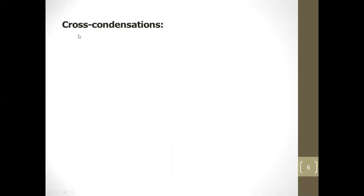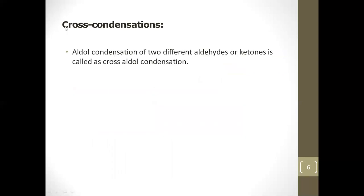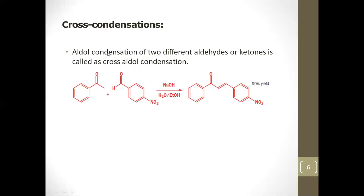Now we discuss cross aldol condensation — the aldol condensation of two different aldehydes or ketones. The previous acid- and base-catalyzed examples were self-condensation. In cross condensation, for example, a ketone can react with para-nitrobenzaldehyde to give an aldol condensation product.